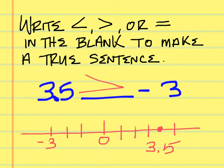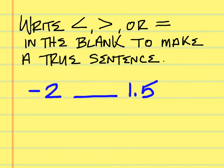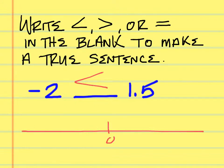What about this one: negative 2 — is it greater than 1.5, less than 1.5, or equal to it? It is less than. Here is the number line: you have zero, negative 2, and here is 1.5. Which one is furthest to the right? 1.5 — so that's why the mouth of the inequality sign opens up to the 1.5, because it is greater.